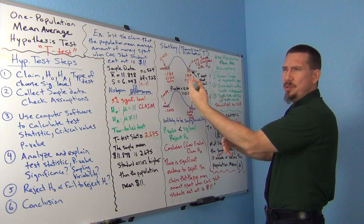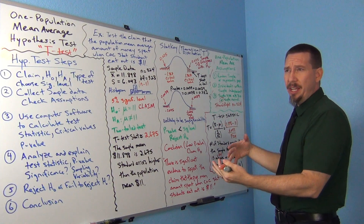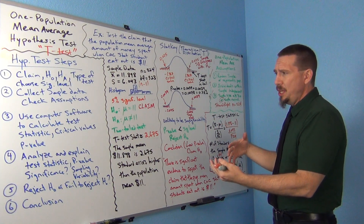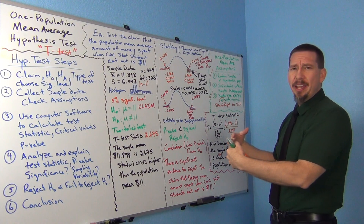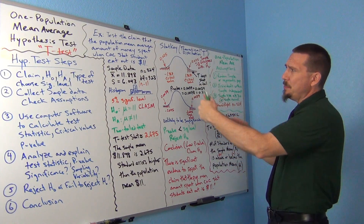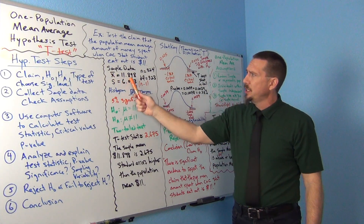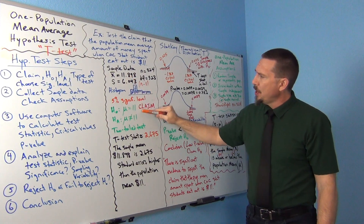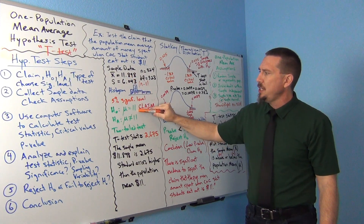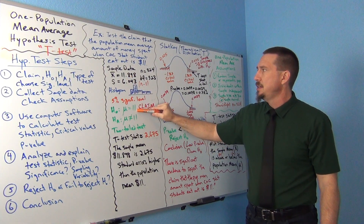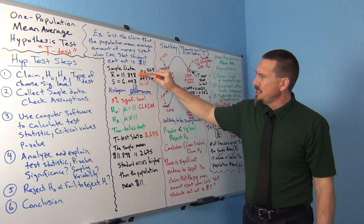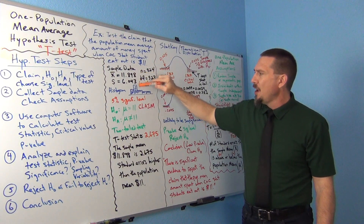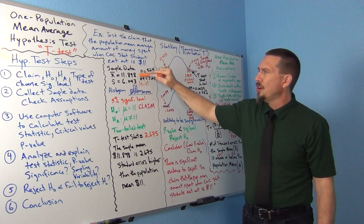We're basically using the same formula for standard error that we used for confidence intervals. But now what we're seeing is how many standard errors is my sample mean — this x-bar, 11.898 — how far is that from the population mean in the null hypothesis? So really it's a comparison of 11.898 and 11. How far apart are those?